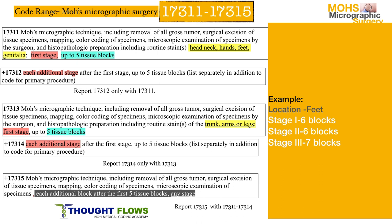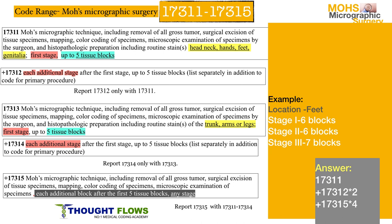For example, if the location is feet and the doctor performed three stages — stage one with six blocks, stage two with six blocks, and stage three with seven blocks — the answer is 17311, 17312 times two for the two extra stages, and 17315 times four for the four extra blocks. In each stage, the description for 17311 covers up to five tissue blocks, so stage one has one extra block, stage two has one extra block, and stage three has two extra blocks — totaling four extra blocks.